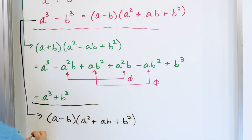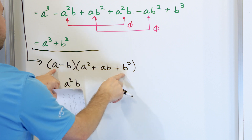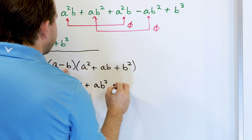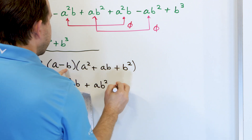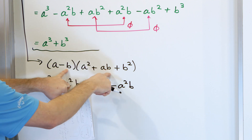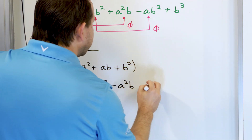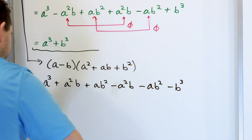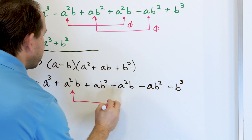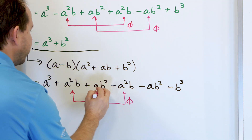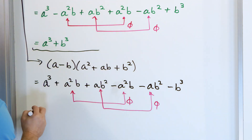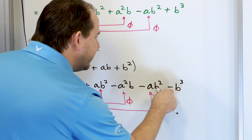Let's multiply it out. A times A squared is A cubed; A times AB is A squared B; A times B squared is AB squared. Now the negative B term: negative B times A squared gives negative A squared B; negative B times AB gives negative AB squared; and negative B times B squared gives negative B cubed. The A squared B terms cancel, the AB squared terms cancel, and we're left with A cubed minus B cubed — proved.